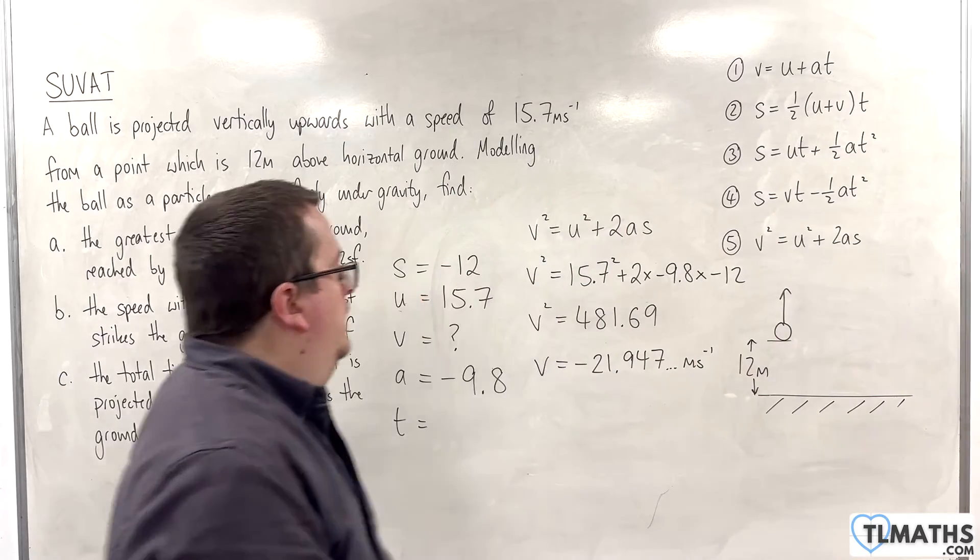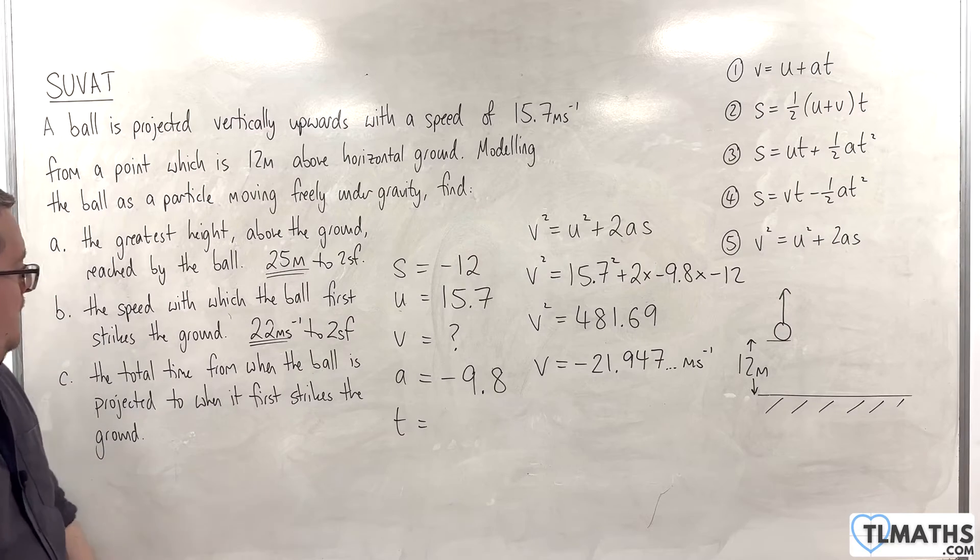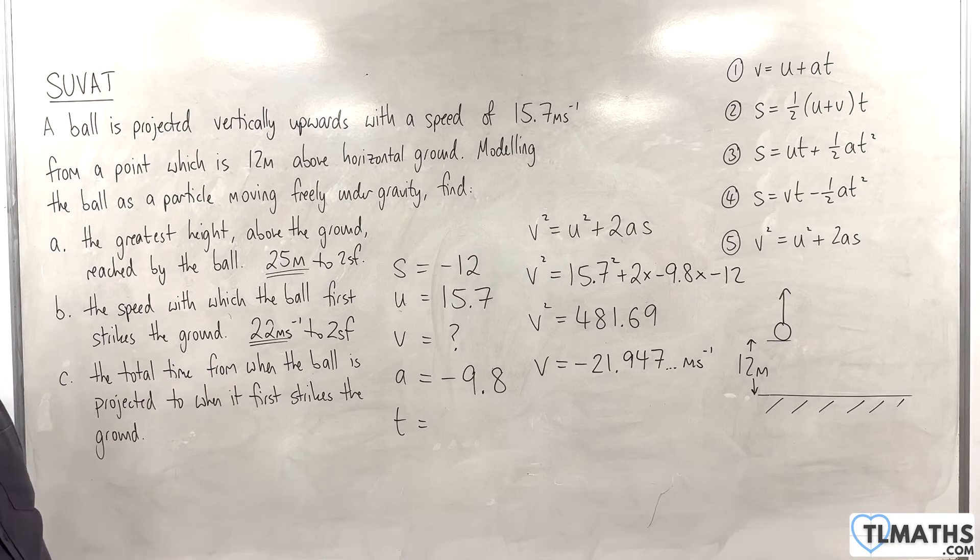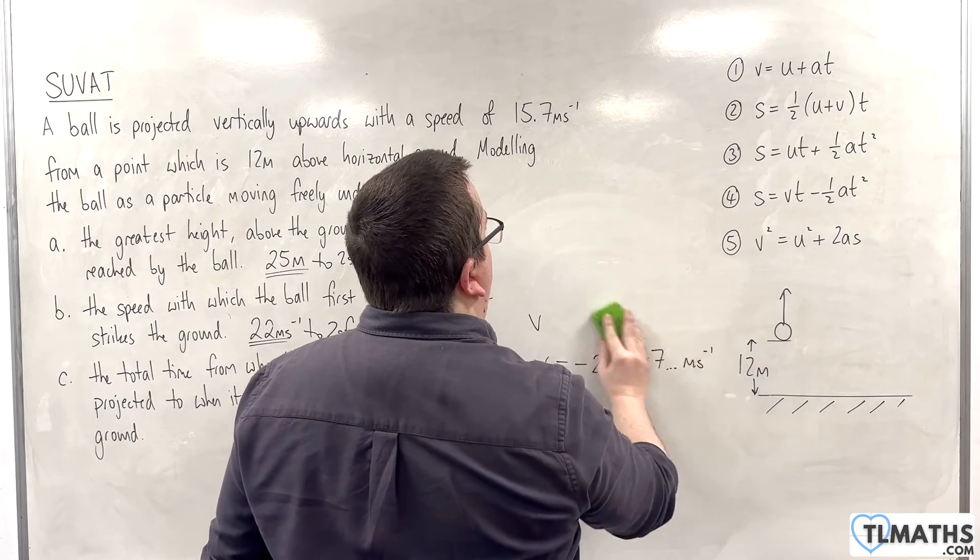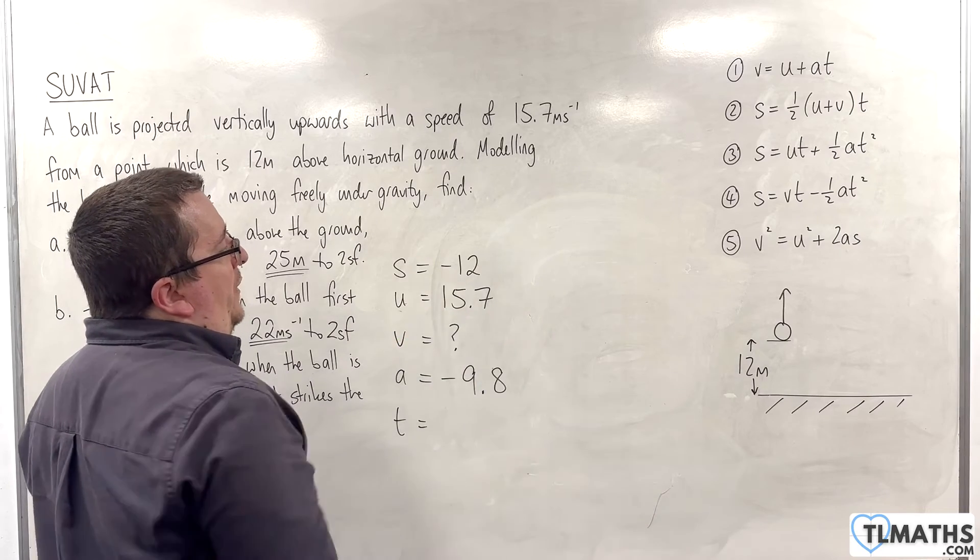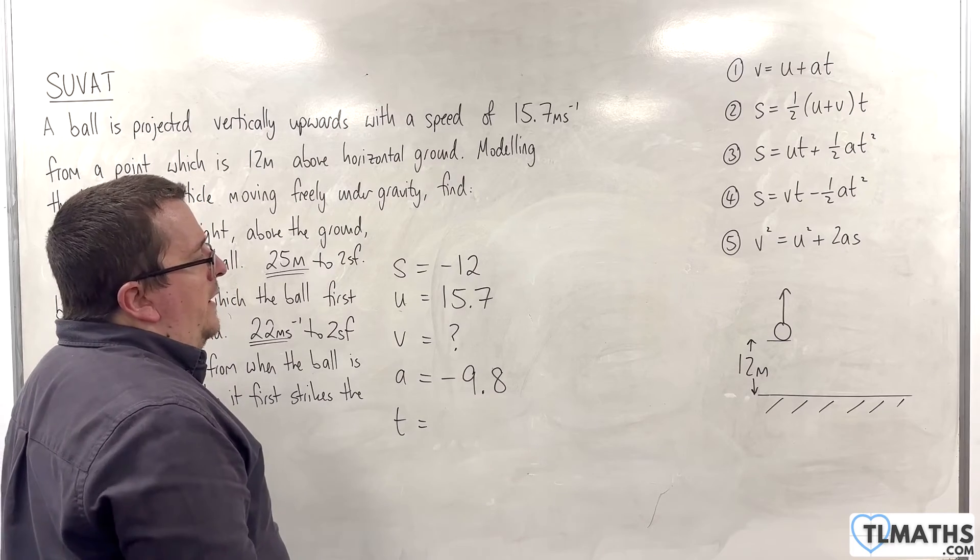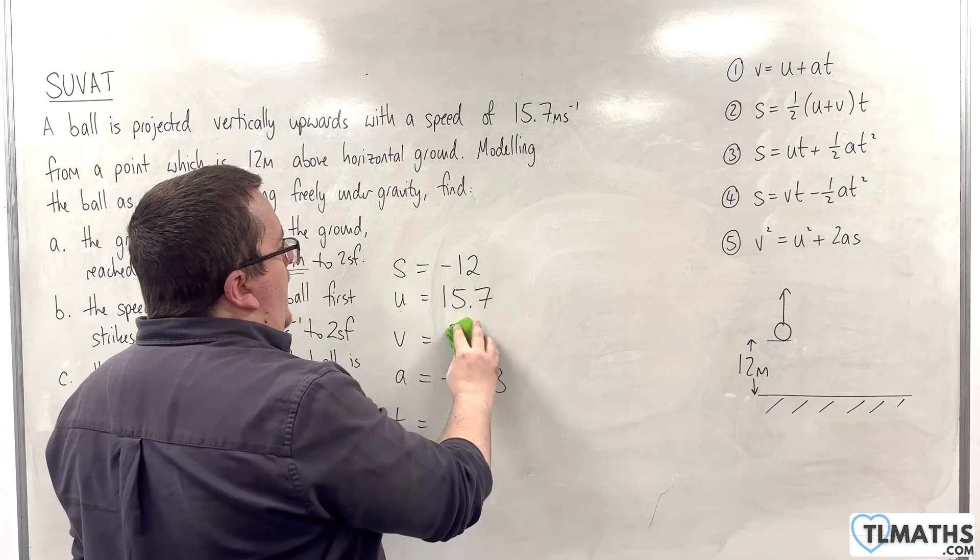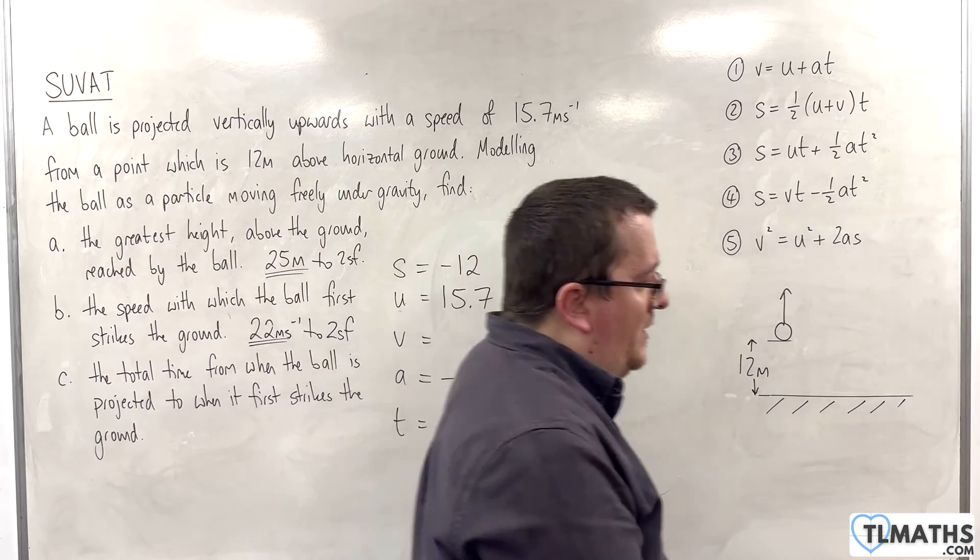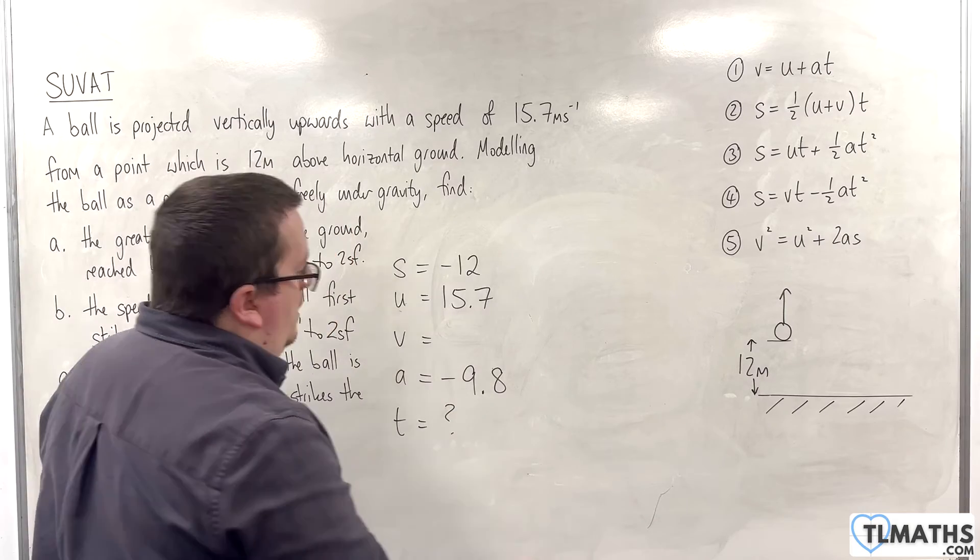Now, again, I'm not going to use previous results to get my next bit, if I can help it. I need to find the total time from when the ball is projected to when it first strikes the ground. So, the initial velocity is the same, 15.7, the acceleration is the same, minus 9.8, and I know when it first strikes the ground, S is minus 12, because it's 12 metres below where it started. So, I can keep all of that, but now I want to work out the time.